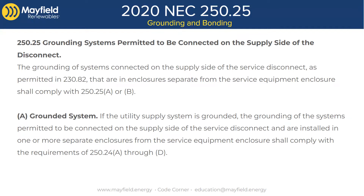In short, 250.25 says that when we have systems connected to the supply side of the service disconnect, we have to comply with subsection A or B. A covers grounded systems, B covers ungrounded systems. For our typical electrical systems, they're going to be grounded systems. And 250.25A basically points us to 250.24A through D. There's not a whole lot new here because 250.24 was already there, but we have a nice section saying go look at this very specific section.